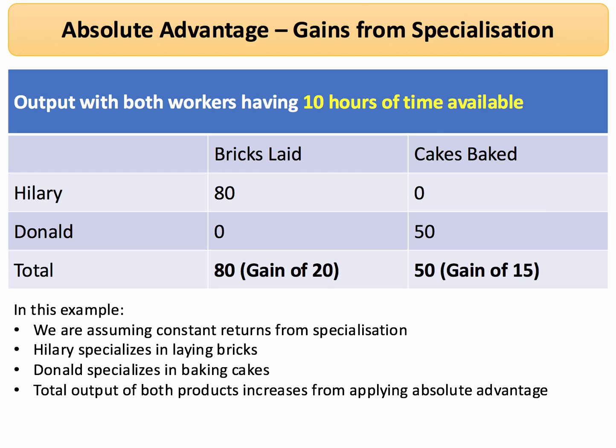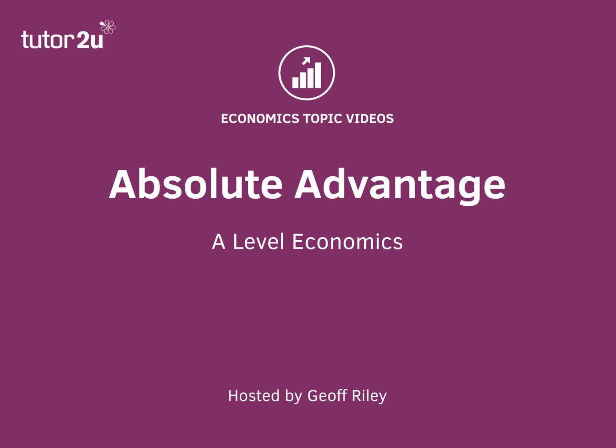So absolute advantage can lead to gains in output, assuming constant returns from each person specializing in the task to which they have an absolute advantage. Absolute advantage is different from comparative advantage, which is a slightly more complex version of trade theory. Check out our YouTube video on comparative advantage for a more detailed example.